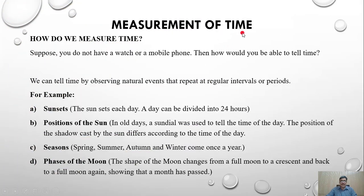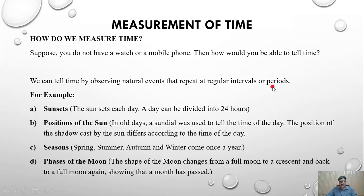Measurement of time. How did we measure time in old days? Suppose you do not have a watch or a mobile phone — how would you be able to tell time? We can tell time by observing natural events that repeat at regular intervals or periods. We will see some common examples of natural events which people followed in old days to measure time.